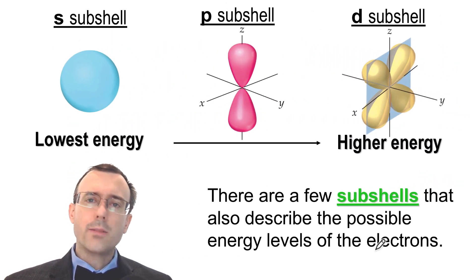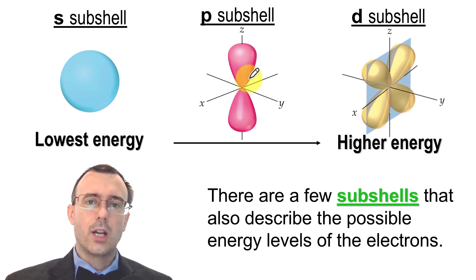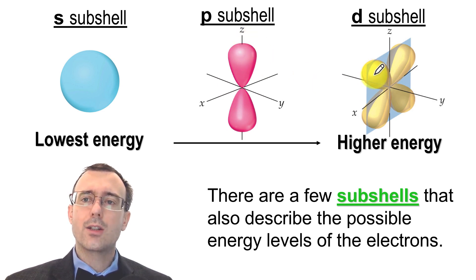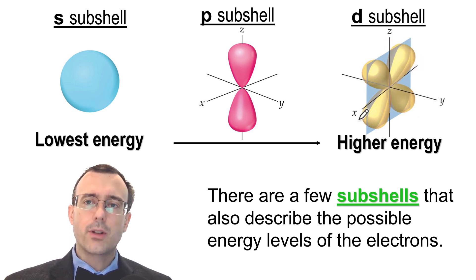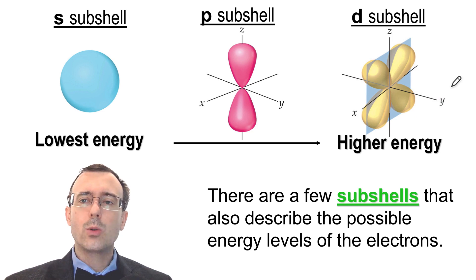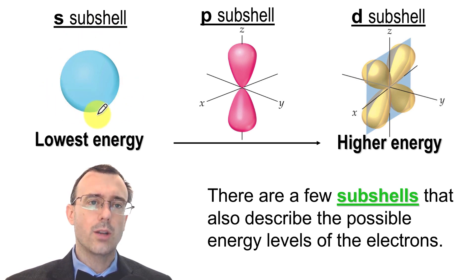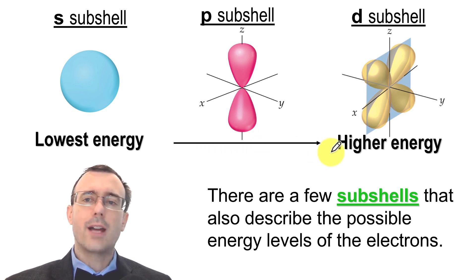The principal quantum number describes the size, and the subshell letter describes the shape. We have the s subshell, which is spherical; the p subshell, which has a figure-8 or dumbbell shape; and the d subshell, which has a cloverleaf shape. These are not the only possible shapes — as you increase the subshell letter (s, p, d, f, g, h...), you get a more and more complex shape. These subshells also describe energy: the s subshell is the lowest in energy, and as shapes get more complex, their energy increases.